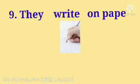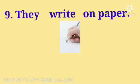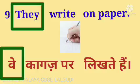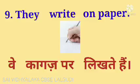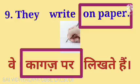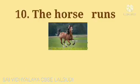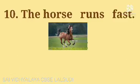They write on paper. Ve kaagaz per likti hai. They means ve. Write means likti hai. On paper means kaagaz per. They write on paper — Ve kaagaz per likti hai.